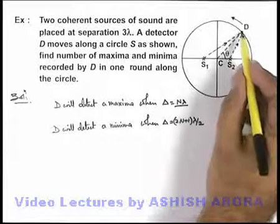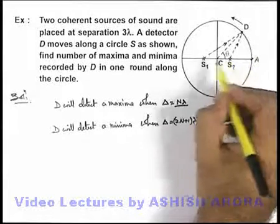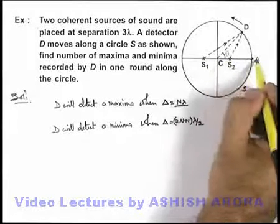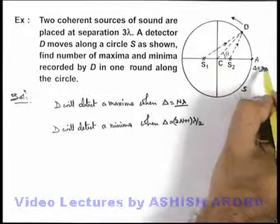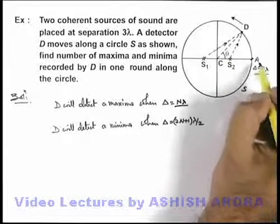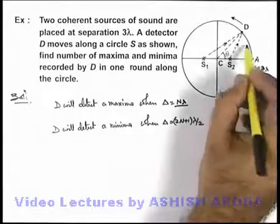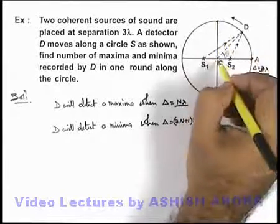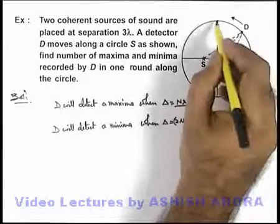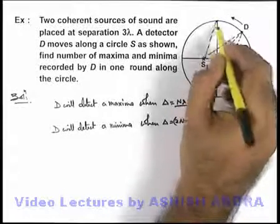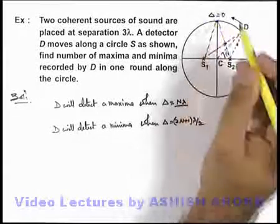Now, let's consider the position of the detector at point A, where the direct waves reaching from the sources to A have a path difference equal to their separation, which is 3 lambda. So if the path difference at location A is 3 lambda, it will be a point of maximum. When this detector reaches the perpendicular bisector position of the line joining S1 and S2, the 2 waves reaching from the sources to the detector will cover equal paths, so the path difference will be zero.